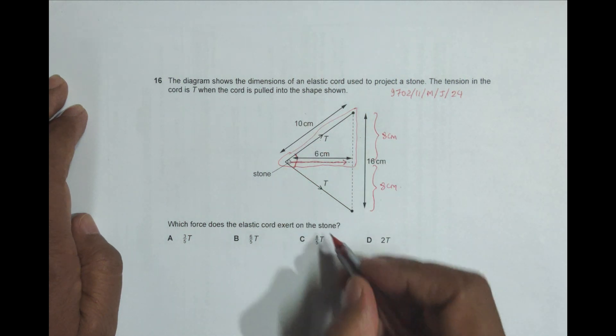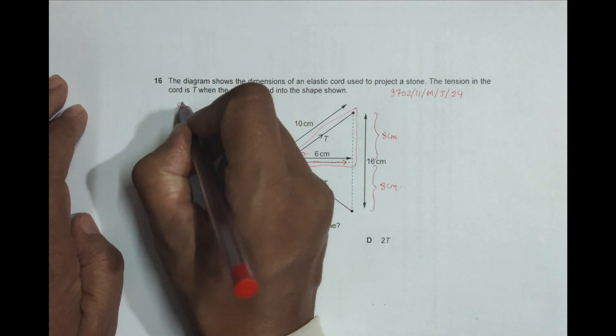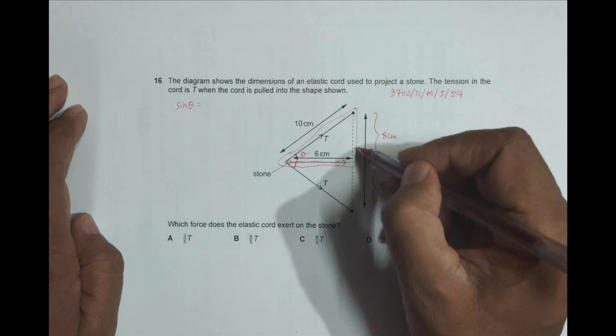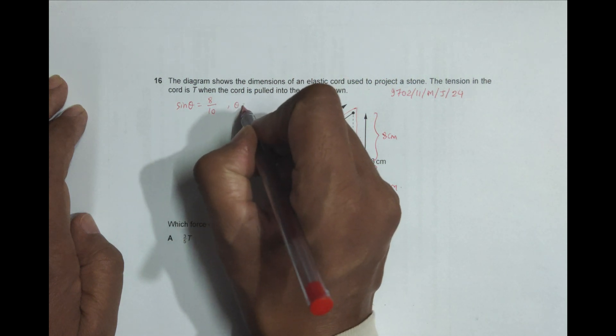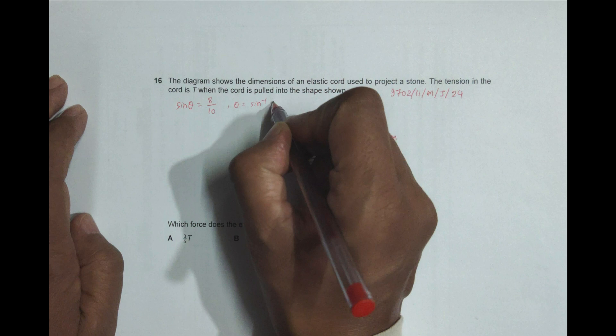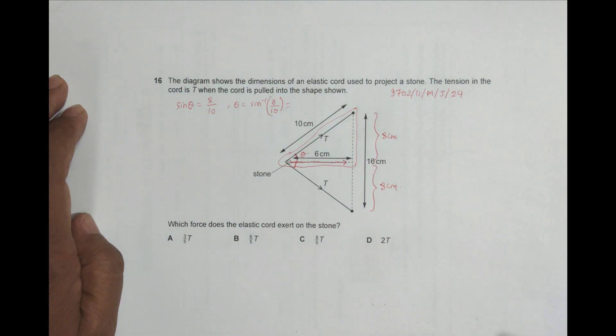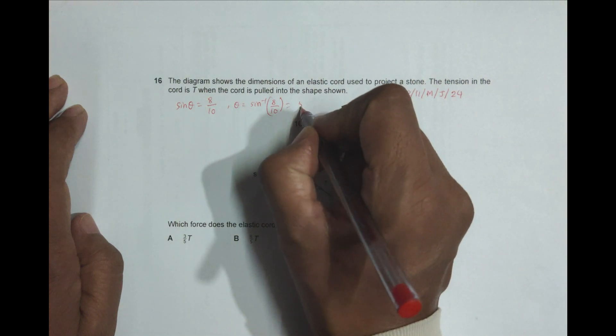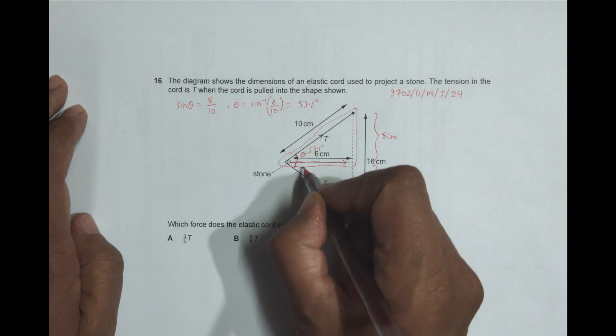The angle theta here will be equal to sine of theta equals perpendicular by hypotenuse, so it's equal to 8 by 10. This gives us theta equals sine inverse 8 by 10, which equals 0.8. So the angle is 53.1 degrees. This angle is 53.1 degrees and this angle is also 53.1 degrees.